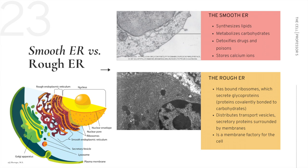The rough ER has bound ribosomes which secrete glycoproteins — proteins covalently bonded to carbohydrates. The prefix glyco means sugar, informing us of glucose and its derivatives. The rough ER also distributes transport vesicles, which are secretory proteins surrounded by membranes. Secretion in cellular biology means that something the cell releases outside of itself to the extracellular matrix, another cell, or into the bloodstream. Finally, the rough ER is a membrane factory for the cell.